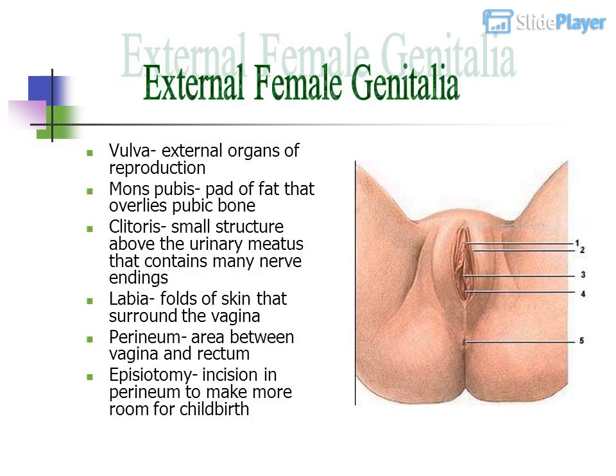The vulva refers to the external organs of reproduction. The mons pubis is a pad of fat that overlays the pubic bone. The clitoris is a small structure above the urinary meatus that contains many nerve endings. The labia are folds of skin that surround the vagina.